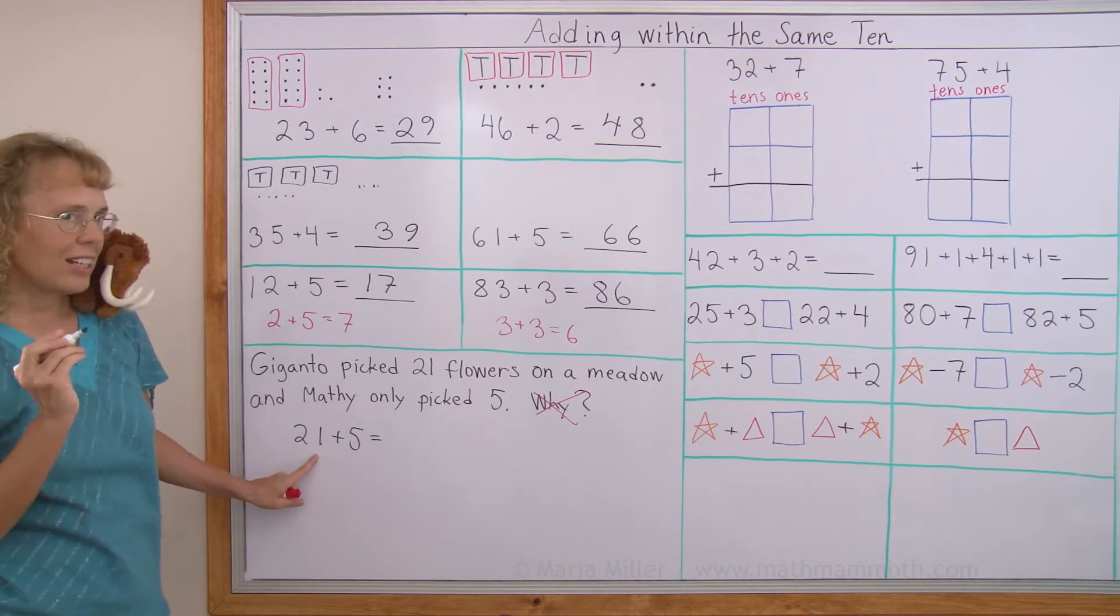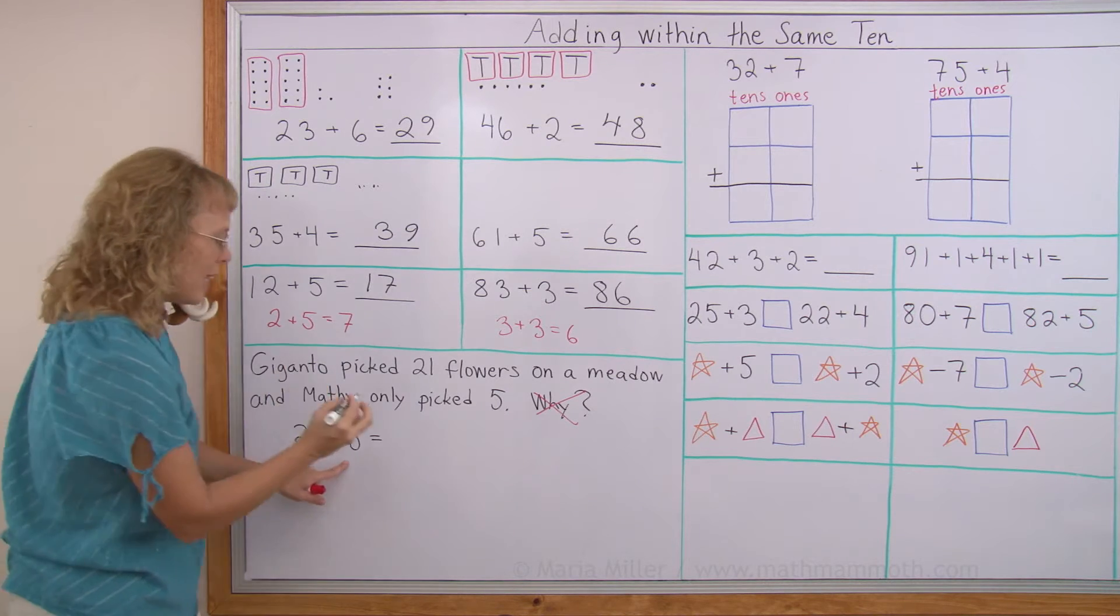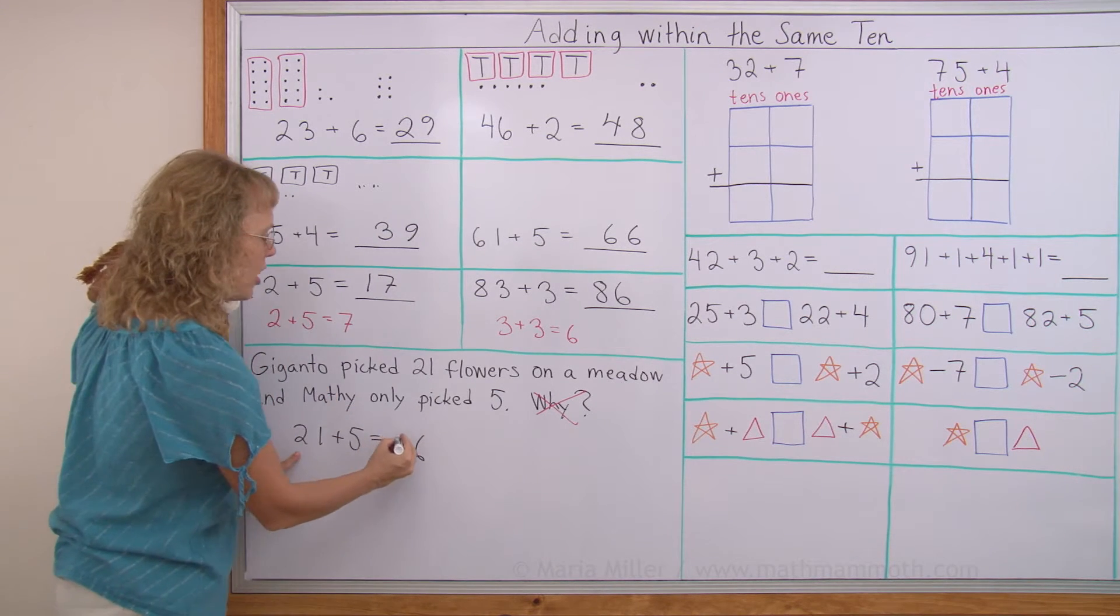For that we need to add 21 plus 5. So that would be, add now 1 plus 5. That's 6. And so these two tens are not going to change. 26.